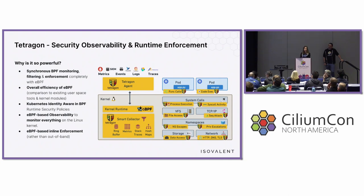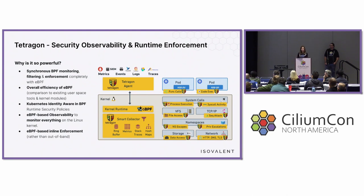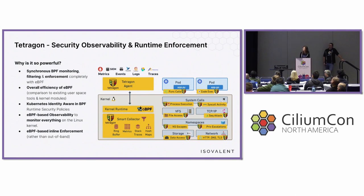So why is Tetragon so powerful? It provides synchronous BPF monitoring, filtering, and enforcement completely in kernel with eBPF. There's also the overall efficiency of eBPF compared to existing user-space tools or kernel modules. We do Kubernetes identity awareness with eBPF, so you can create Kubernetes identity-aware runtime security policies. We can monitor everything happening in the Linux kernel, and we do eBPF-based inline enforcement in kernel rather than out-of-band.